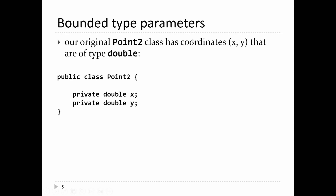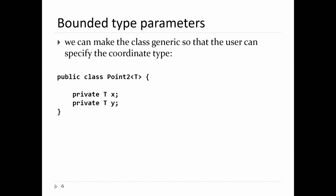Remember our Point2 class — it has two coordinates, X and Y, both of type double. But there are many applications where you want a point whose coordinates are not necessarily double — you might want integer coordinates, or character-based coordinates like in games. So why don't we take our Point class and make it generic on its coordinate type? We can change the fields from type double and add a generic type parameter, so the class becomes Point2<T>.